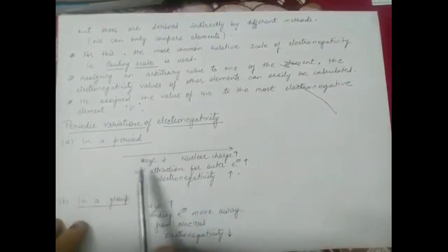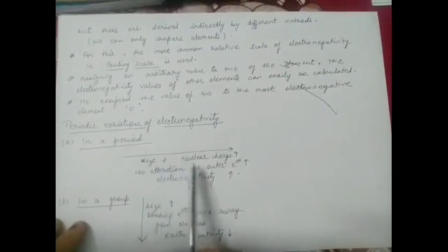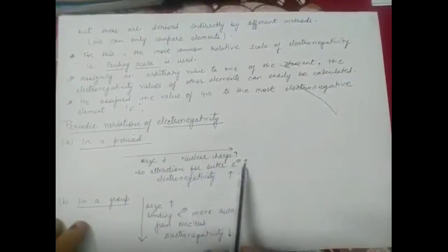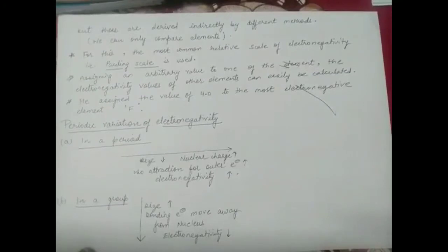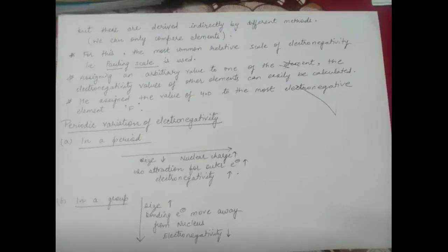The periodic variation of electronegativity: in a period, as you go left to right, size decreases and nuclear charge increases, so attraction for outer electrons increases and electronegativity increases. Going down a group, size increases, bonding electrons move away from the nucleus, and electronegativity decreases. We can only compare elements on this basis.